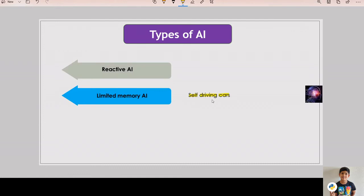These cars can store recent speed of nearby cars, the distance of other cars, speed limit and other information to navigate.